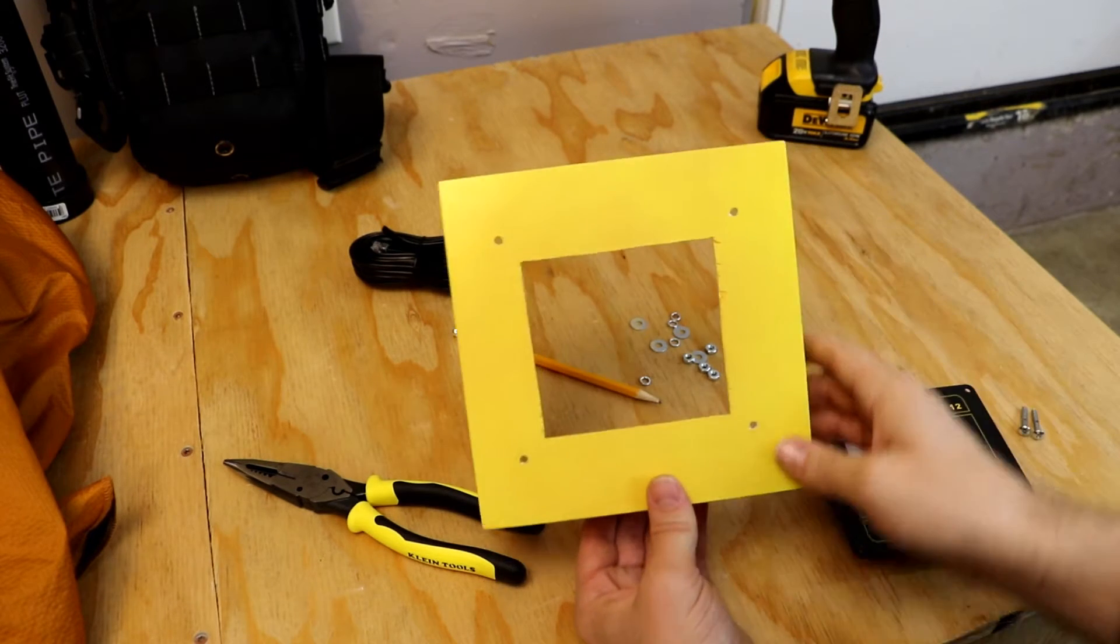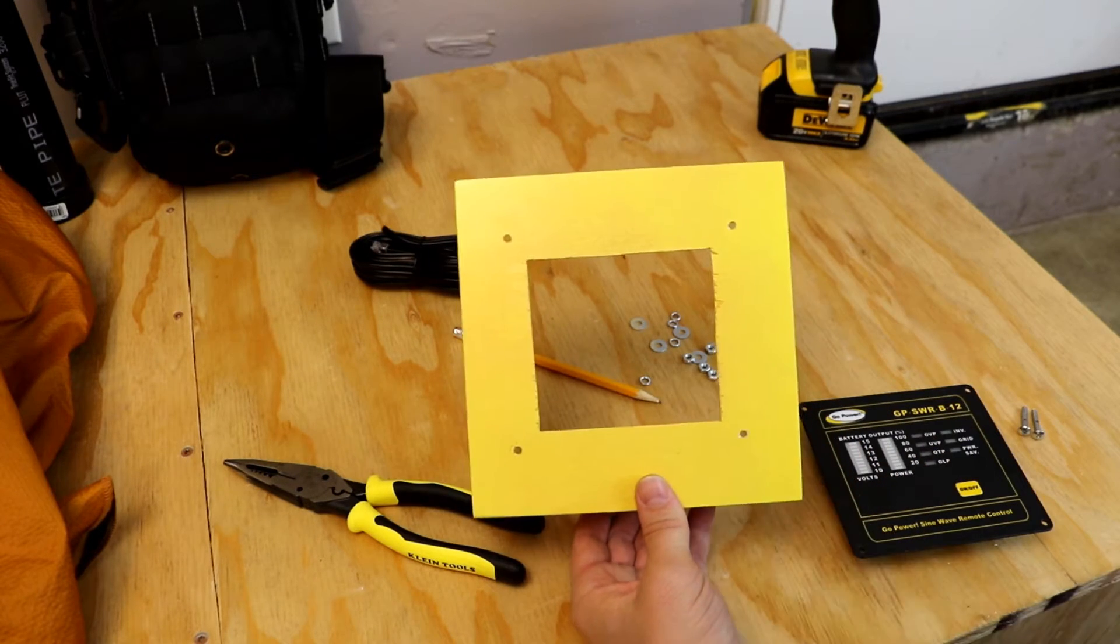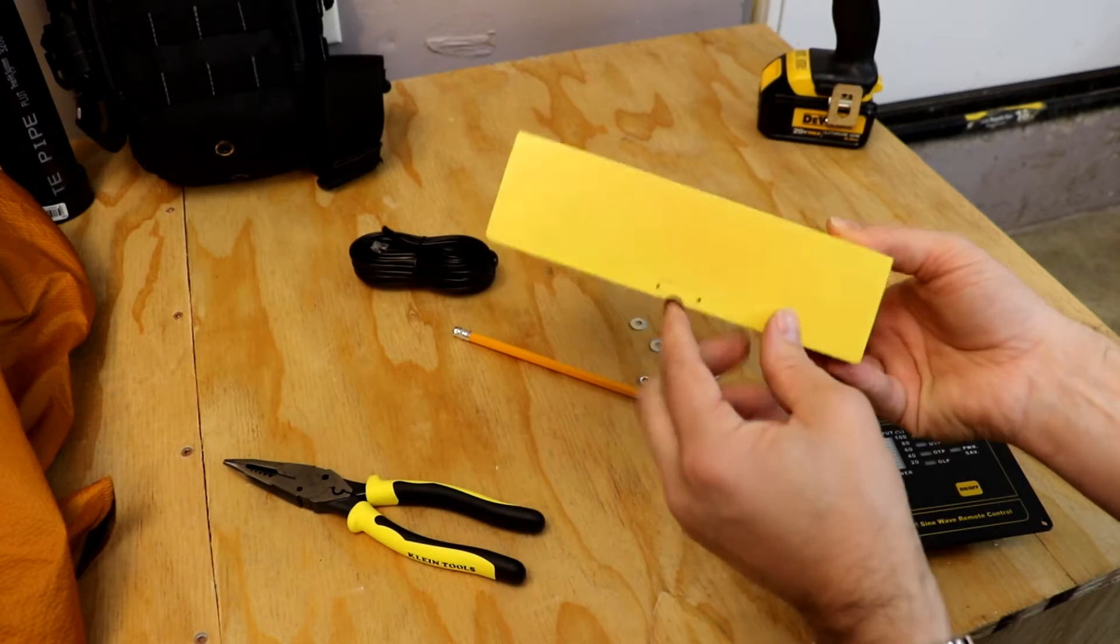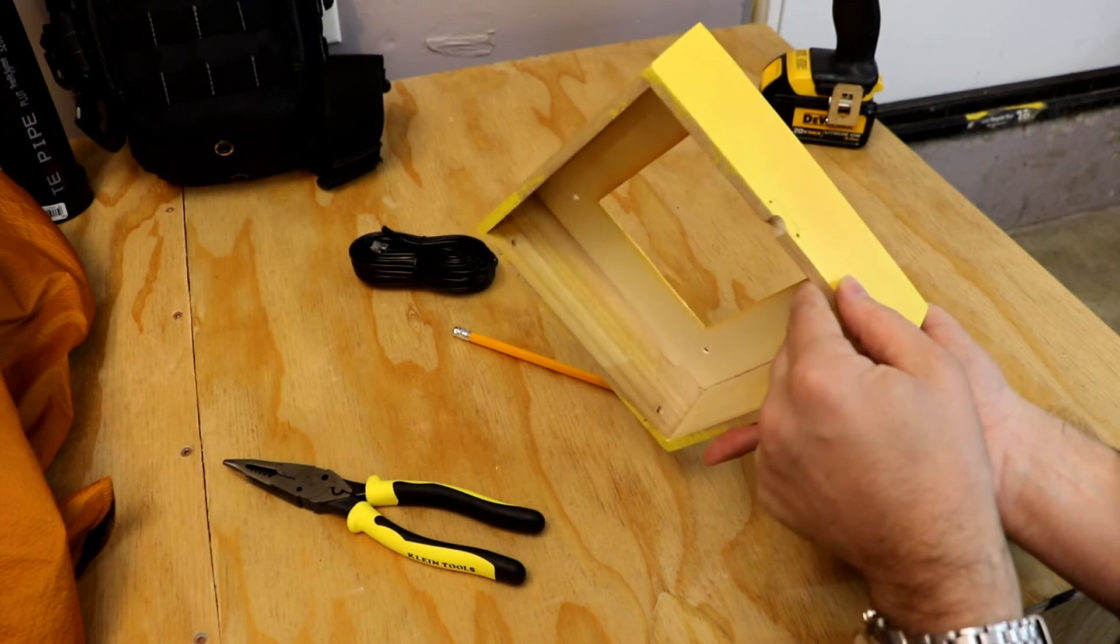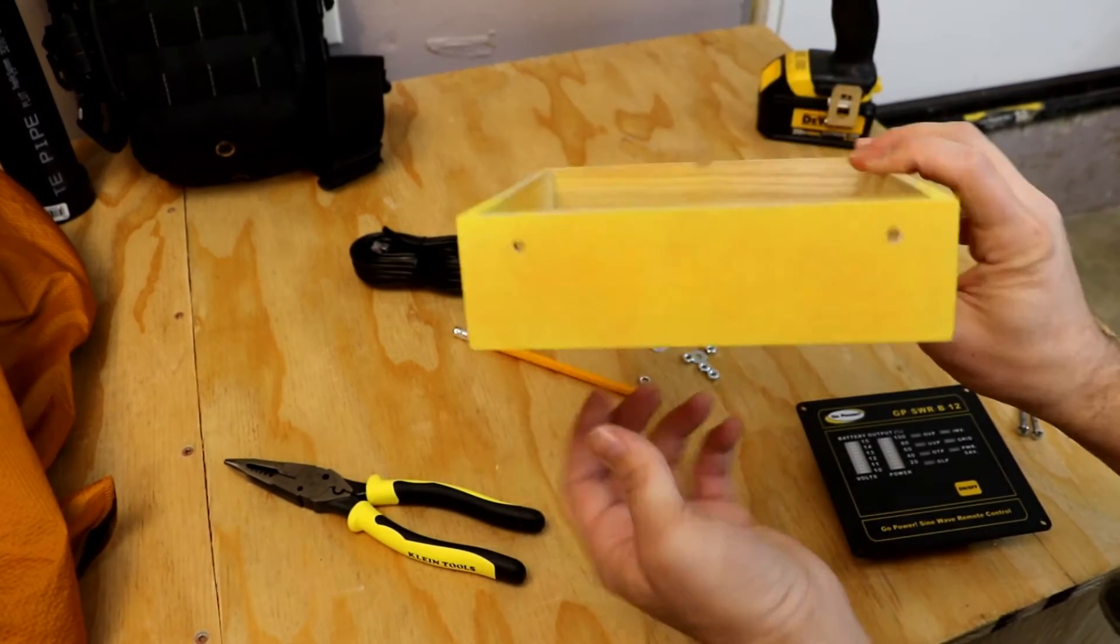All right, you guys. So I went ahead and I've got the box pretty much complete at this point. Cut a little hole down here as well with the Dremel. That way the cord can come up there.